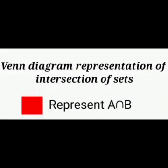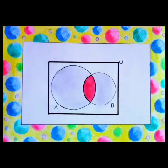Venn diagram representation of intersection of sets: When finding A intersection B, the two circles intersect each other and the intersecting part represents A intersection B.